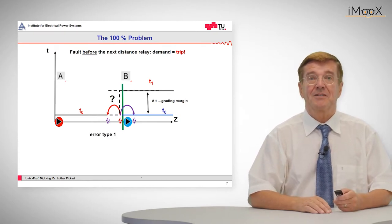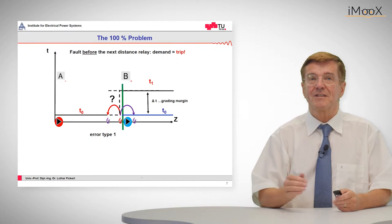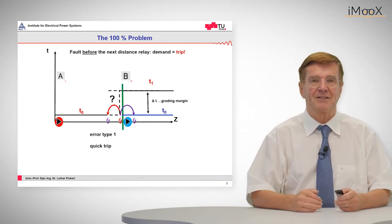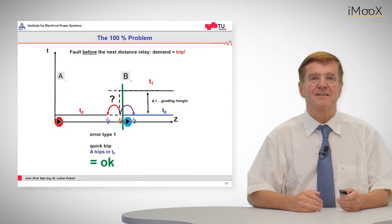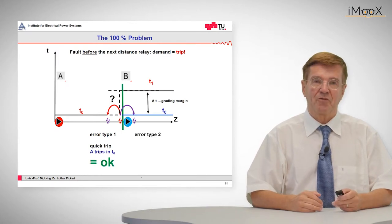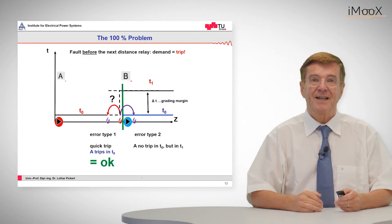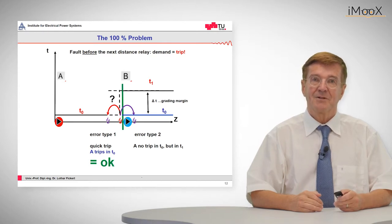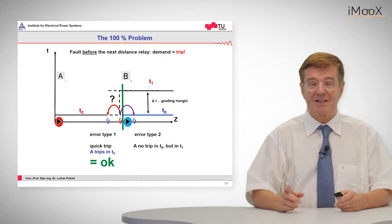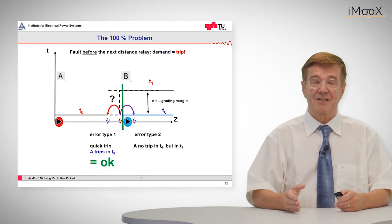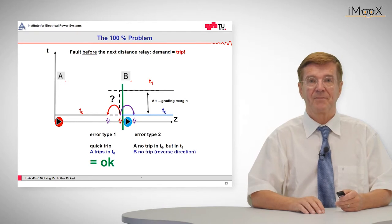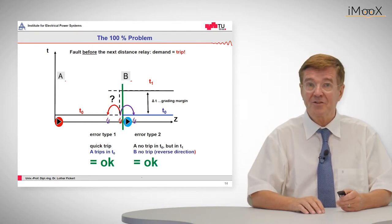There may be error type 1, that is the fault is measured before its actual position. So A will quickly trip and that is okay. If we have error type 2, then A will not trip but in raised time and there will be nevertheless a selective trip because relay B will not pick up because for relay B this fault is in reverse direction and that is a no-go for a trip. So B does not trip and that is okay as well.